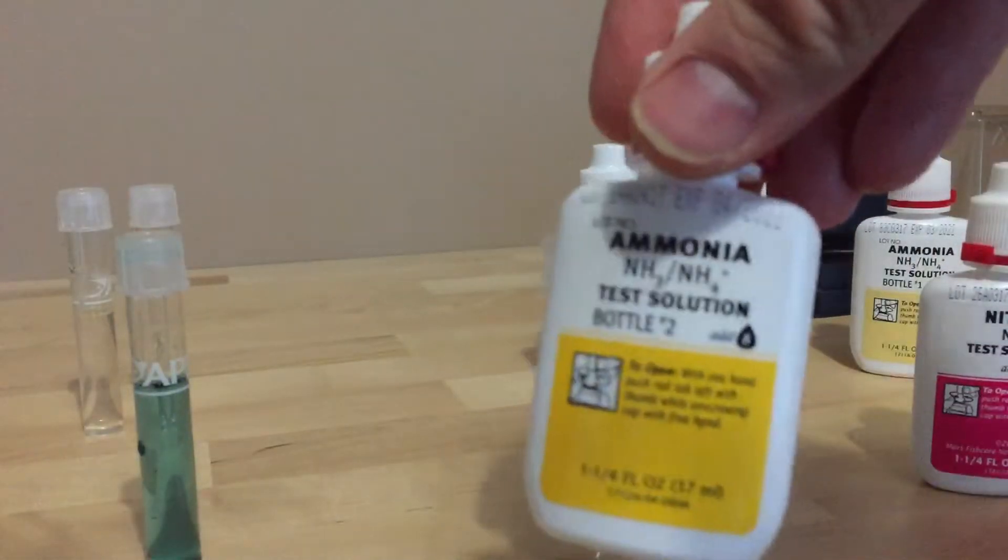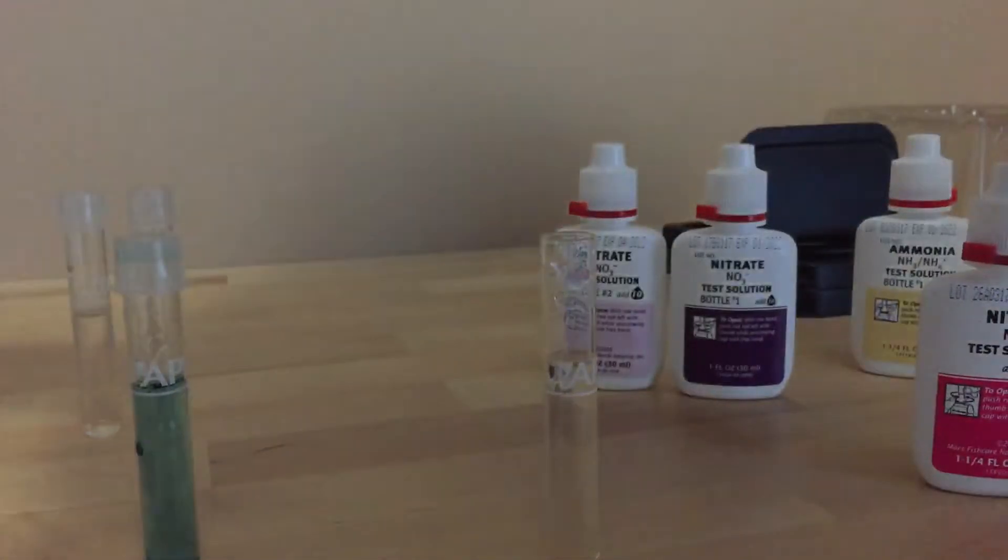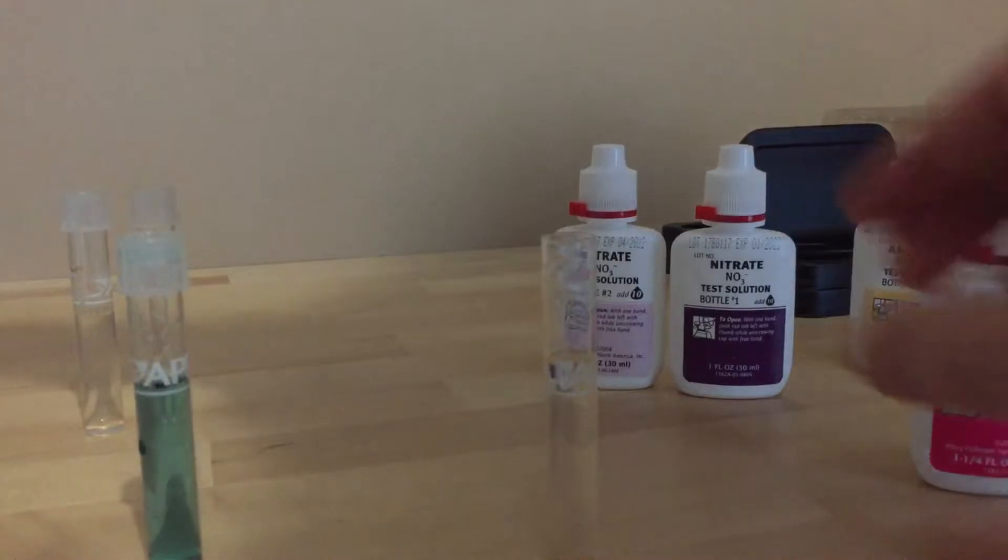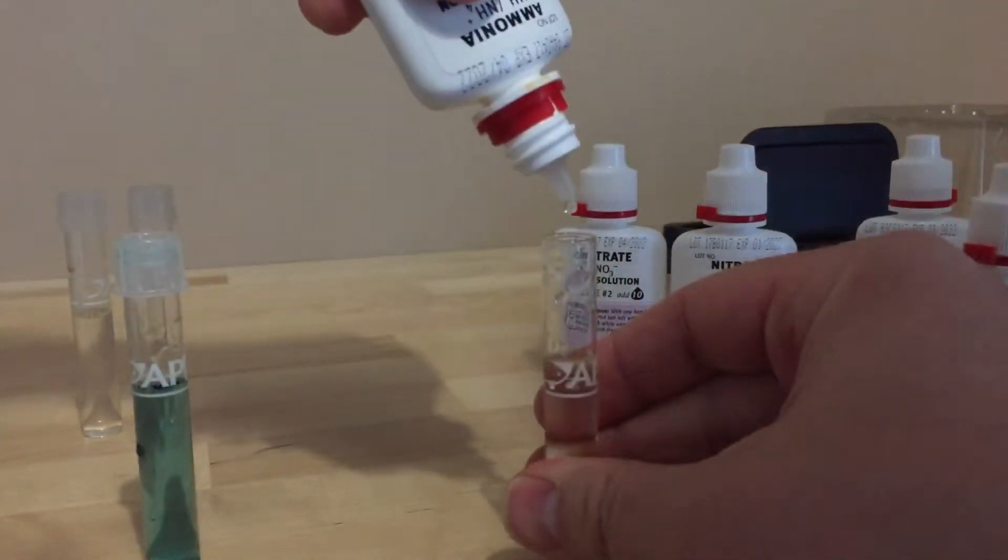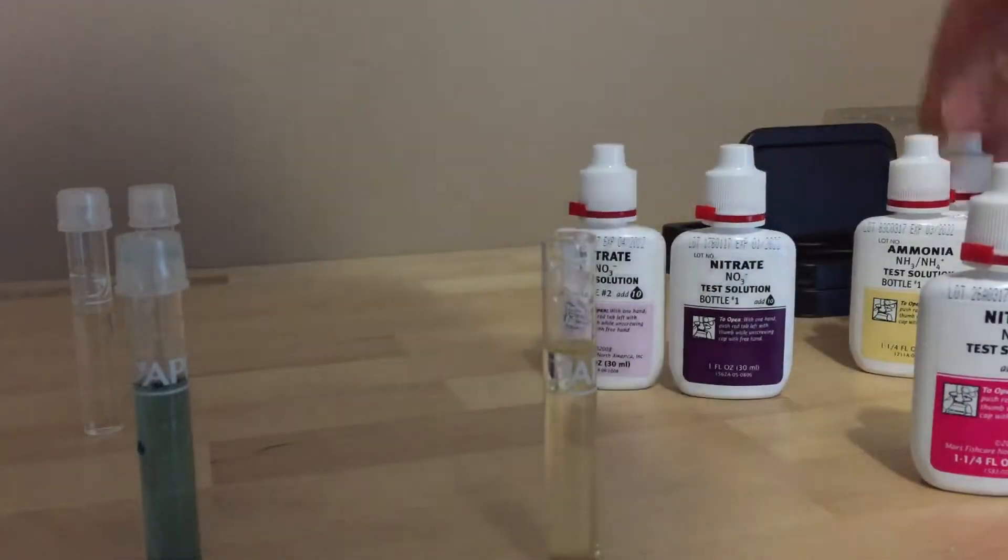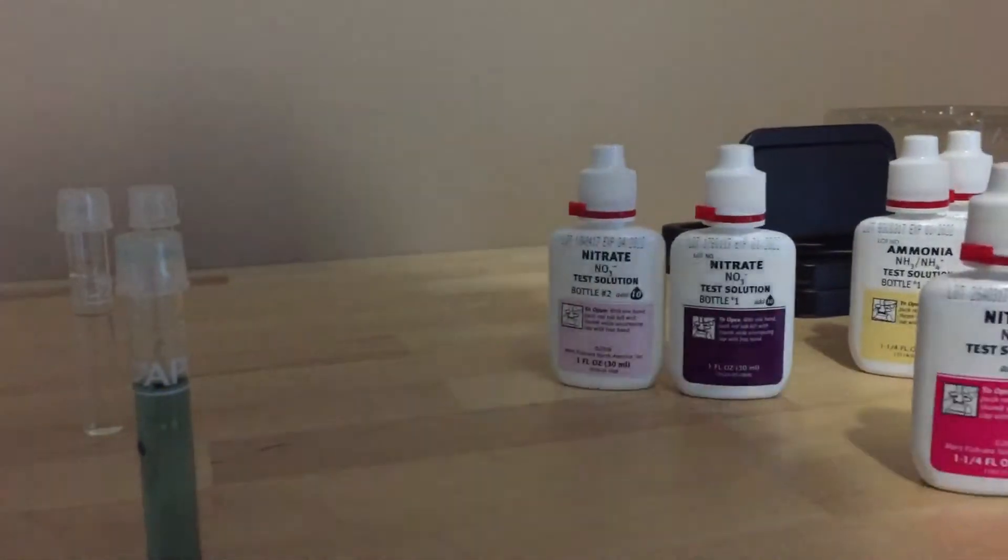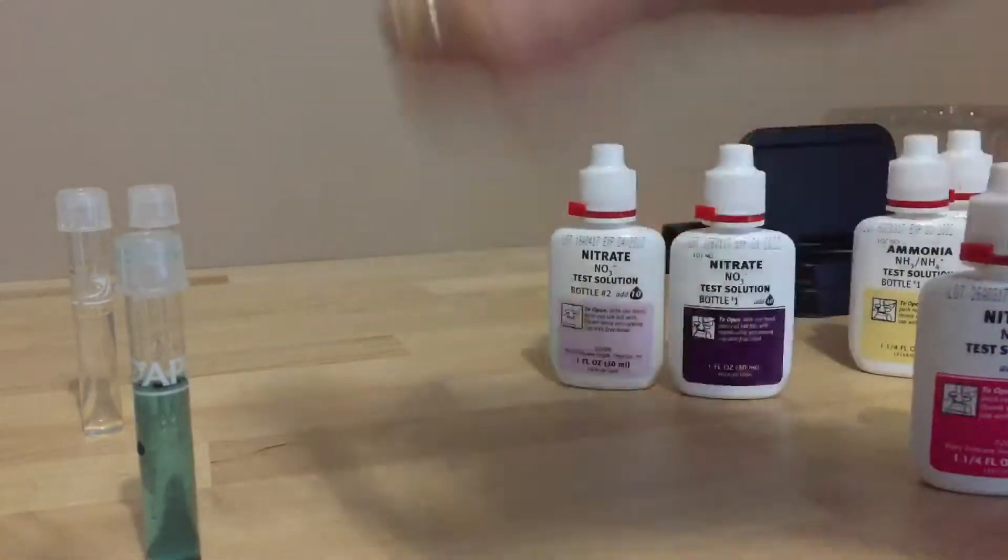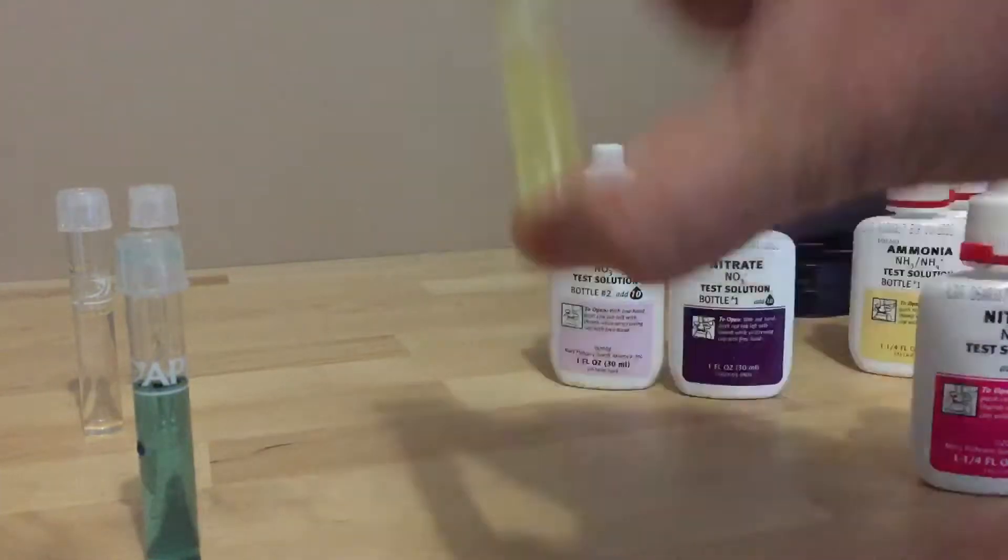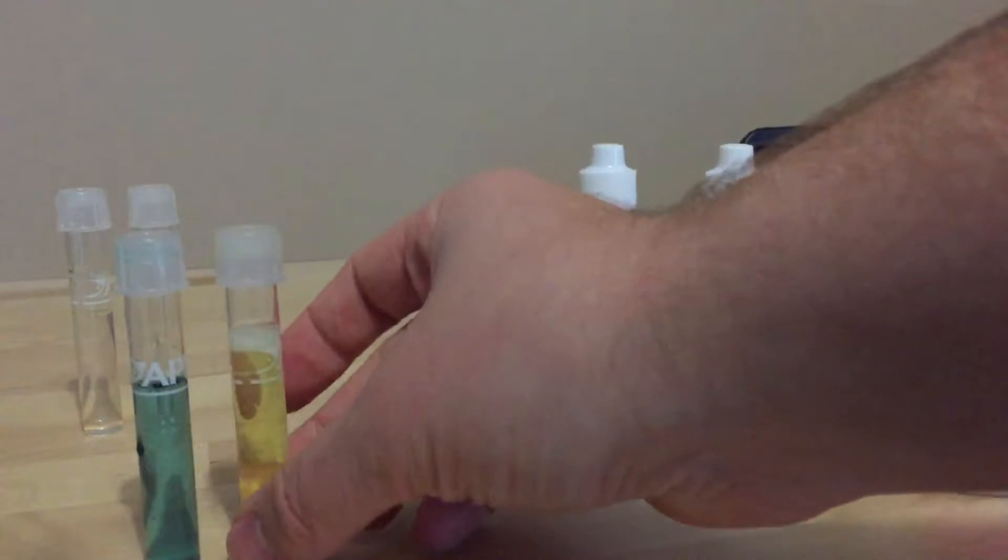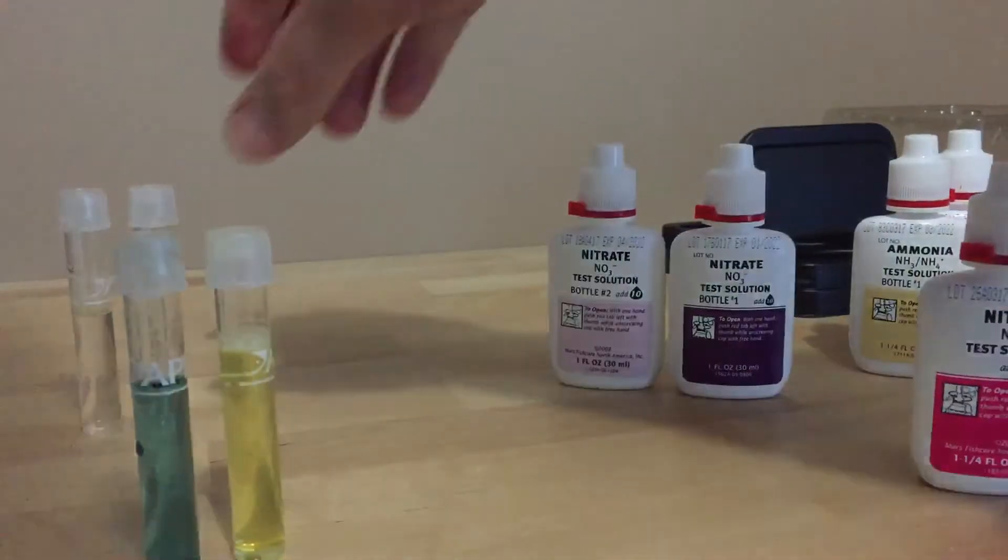So that's the first bottle. Then ammonia two, and again it's eight drops. Just give it a quick shake. One, two, three, four, five, six, seven, eight. Okay, that's the ammonia test. Again, put the cap on and just shake that, shake it for five or ten seconds, and we'll let that one sit so you can see the color development as it's sitting there.